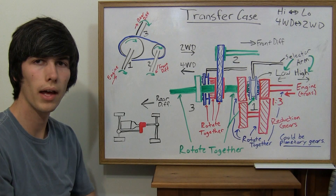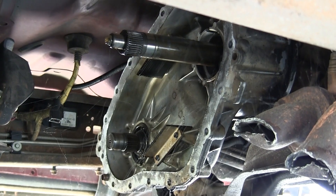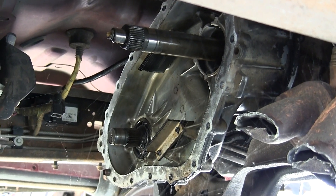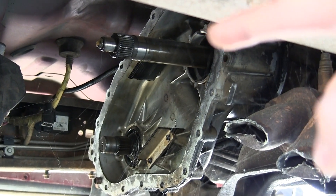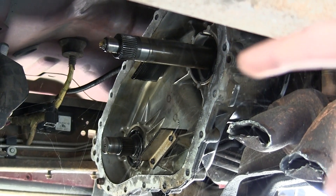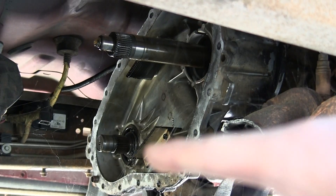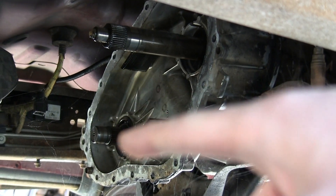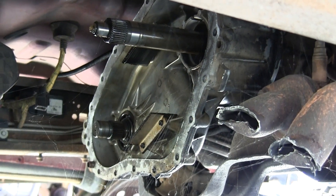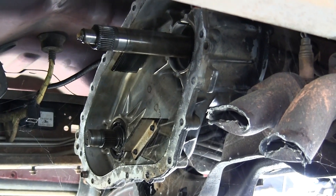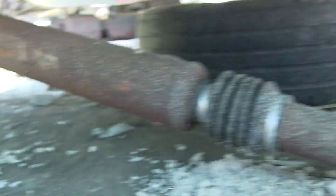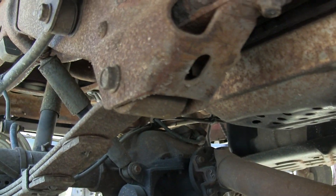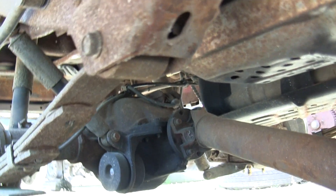So here we have the inside of a real transfer case. This first shaft here goes all the way to the back, and it's connected with a chain to this other shaft over here, which drives the front two tires. This shaft is connected to the rear drive shaft — it's actually been taken off here — and that drives the rear tires as it goes to the back differential.